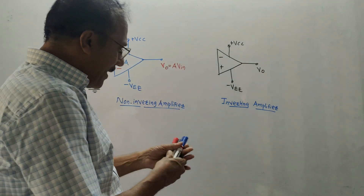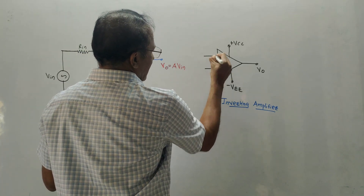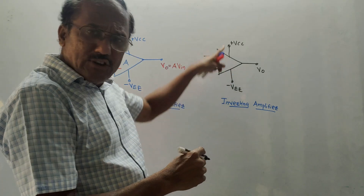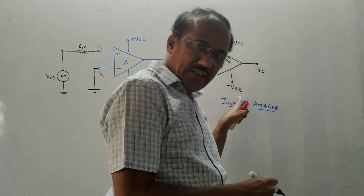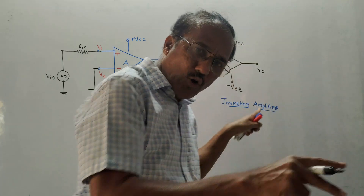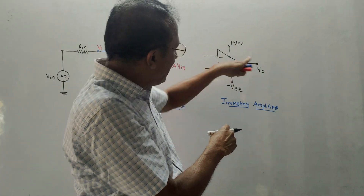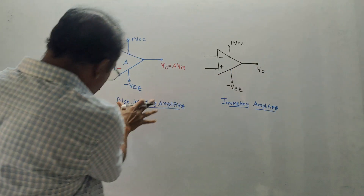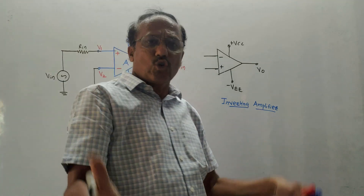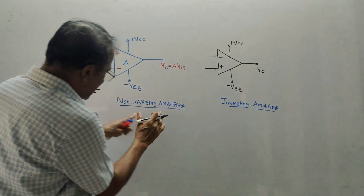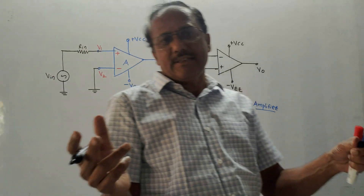This is the basic symbol of Op-Amp. We need to use two terminals. Plus VCC is the positive supply voltage and minus VEE is the negative supply voltage because it requires dual supply. V0 is the output voltage. The first configuration is the non-inverting amplifier.